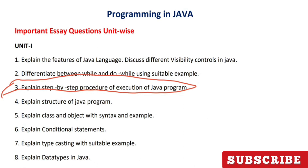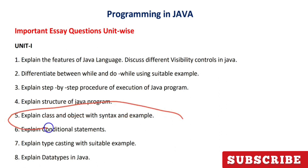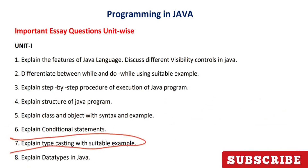The fourth question is the structure of Java programming — how you write a Java program. The fifth question is: what is class and object in Java? Since Java is an object-oriented programming language, you need to explain classes and objects with syntax and examples. The sixth question covers conditional statements, which are similar to C and C++. The seventh question is typecasting — how you change the type of data from one type to another, covering implicit and explicit conversion.